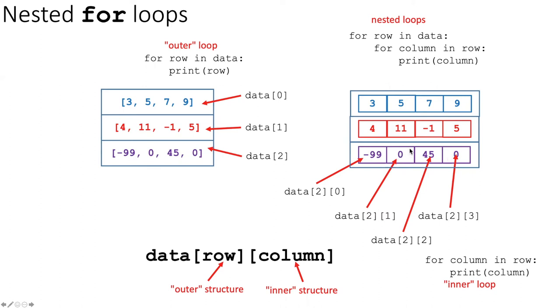And that is stepping through the inner data structure. So what I can do to create a nested loop is to have one outer loop, which steps through the rows, and that has this indentation level here. And then for each of the rows that I'm stepping through, I then step through each of the columns in that row.